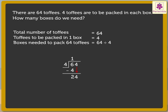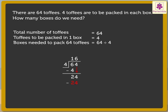Now bring down the next digit, that is 4, and write it beside 2. Back to comparison: 24 is greater than 4, so we can divide 24 by 4. How many times can 4 go into 24? Yes, six times. So we write 6 above the 4.